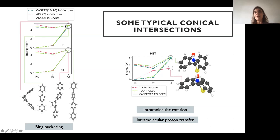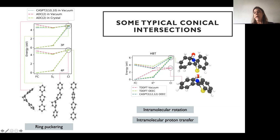Looking at possible conical intersections in solution versus the solid state, typical conicals associated with ring puckering or changes in aromatic rings are clearly avoided in the solid—they are very high in energy. Other possibilities include intramolecular rotation coupled with intramolecular proton transfer, which shows an accessible conical intersection in vacuum or solution that becomes higher in energy and not accessible in the solid state. So, to optimize these systems, we want localized excitations, small exciton couplings relative to reorganization energies, and avoided stable conical intersections.